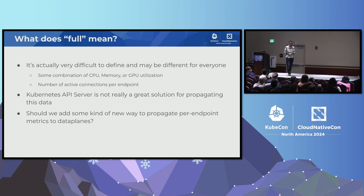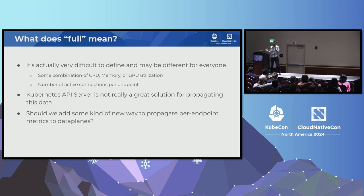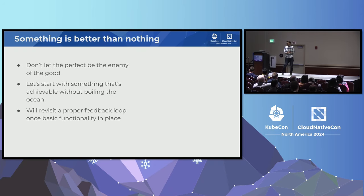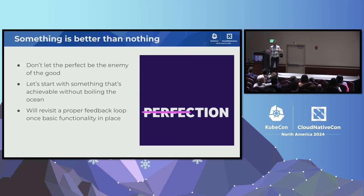Maybe 'full' is some combination of CPU, memory, GPU utilization, or active connections — maybe it's an L7 metric we don't really have in Kubernetes at all. And the Kubernetes API server is not really a great solution for propagating this information. It's just not meant for this kind of rapidly updating data. Endpoint slices is basically the limit of how far you want to push that. So should we add some new way to propagate per-endpoint metrics to the data plane? I started going down quite the rabbit hole. But ultimately, something is better than nothing — don't let the perfect be the enemy of the good. Let's start with something we can achieve, and revisit that proper feedback loop at some future point.